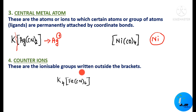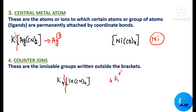Counter ions are the ionizable groups written outside the brackets — also called the ionic sphere. For example, in K₄[Fe(CN)₆], the 4K⁺ ions written outside the square bracket are the counter ions.